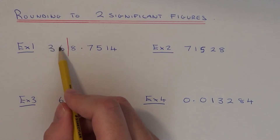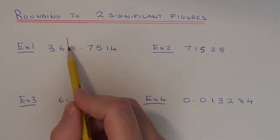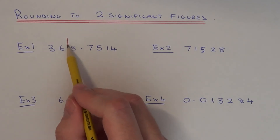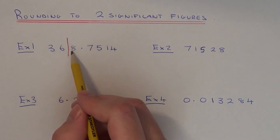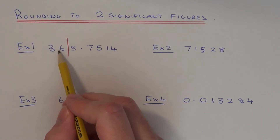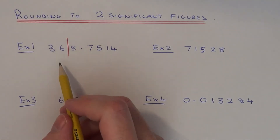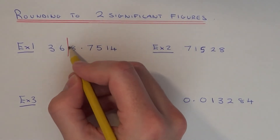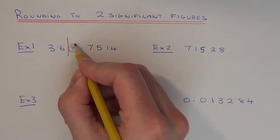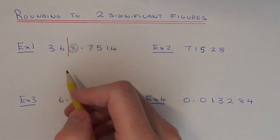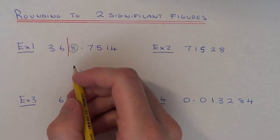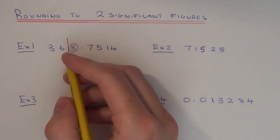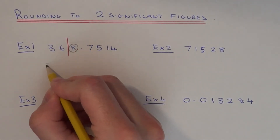So we've got the three and the six, and I've put my line in here. We need to decide whether it's closer to 360 — that's if I round the number down — or 370 if I round the number up. Since the number after the line is an eight, that is five or above, so I need to round the number up. So our answer will be closer to 370.